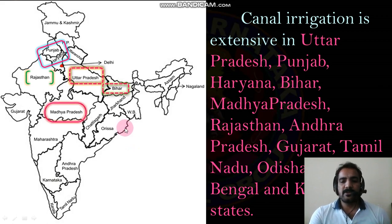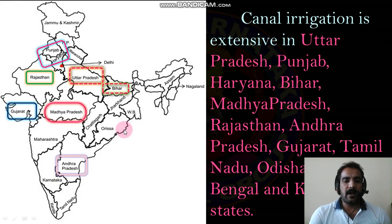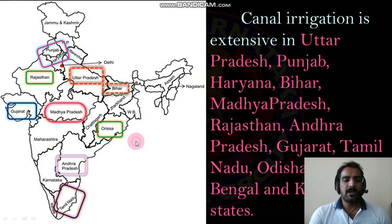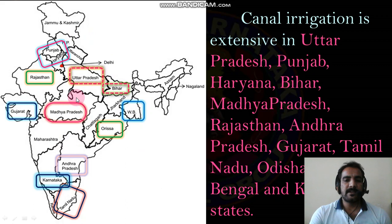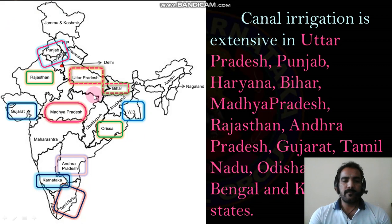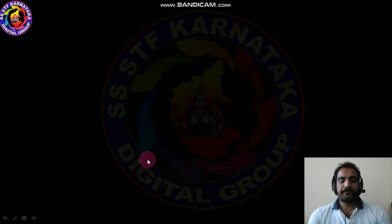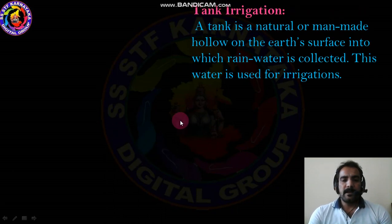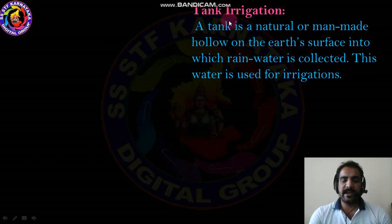Canal irrigation is also important in Karnataka. All these states rely on canal irrigation, which plays a major role in irrigation. The third type is tank irrigation.